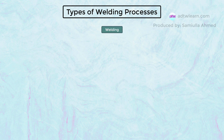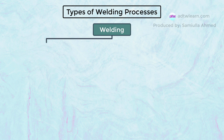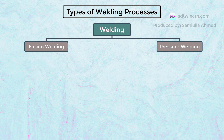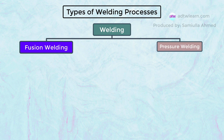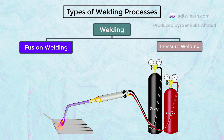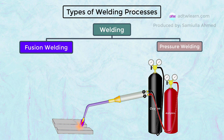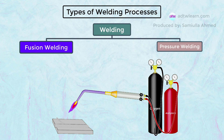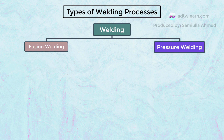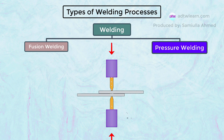Welding is broadly classified into two categories: fusion welding and pressure welding. Under these two categories there are different types of welding processes. In the fusion welding process, the metals are heated up to their melting point and allowed to fuse — there is no use of any pressure. Whereas in the pressure welding process, we make use of external pressure along with some heat to join the metals together.